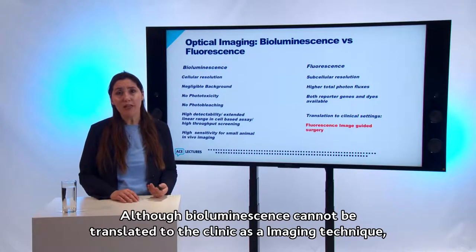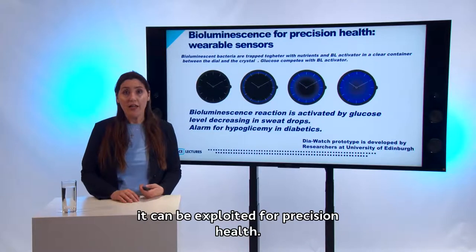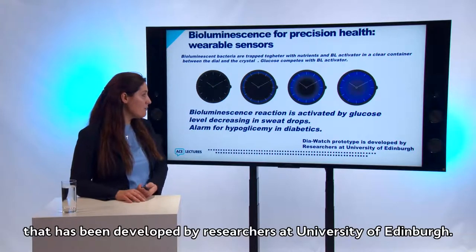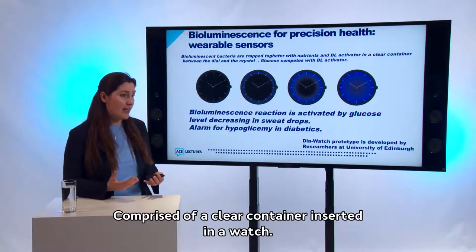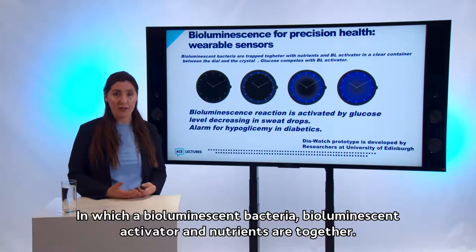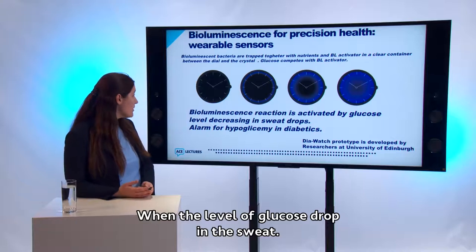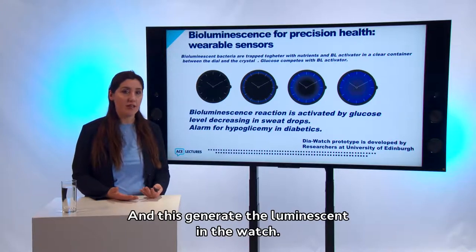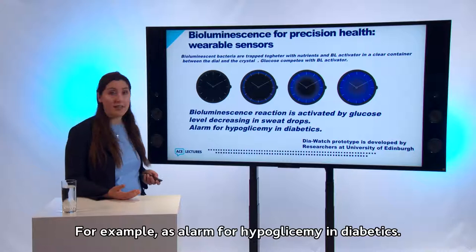Although bioluminescence cannot be translated to the clinic as an imaging technique, it can be exploited for precision health through wearable sensors. For example, the DIA watch prototype developed at the University of Edinburgh contains bioluminescent bacteria, a bioluminescence activator, and nutrients in clear containers inside a watch. The bioluminescence activator competes with glucose — when glucose levels drop in sweat, the activator generates luminescence in the watch. This type of wearable sensor can serve as an alarm for hypoglycemia in diabetics.